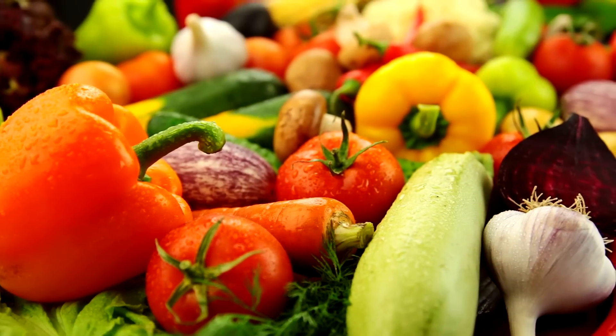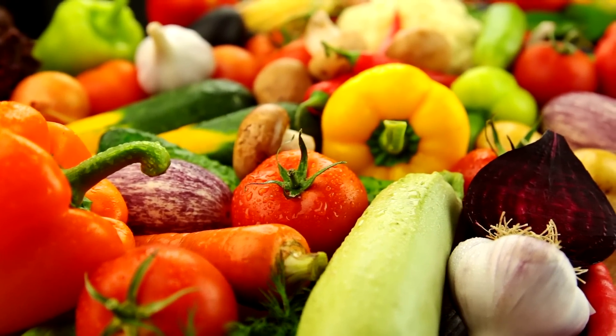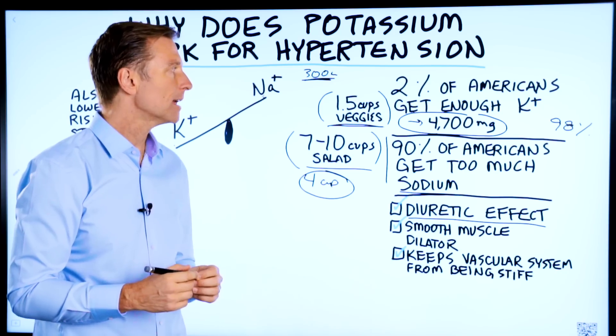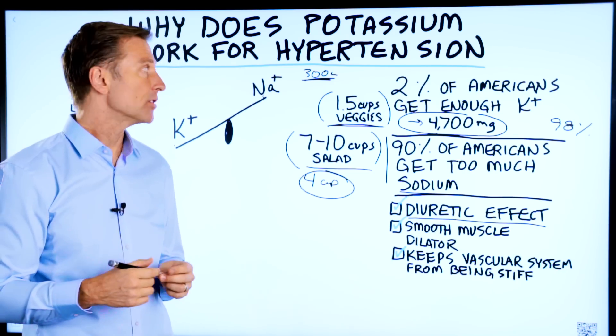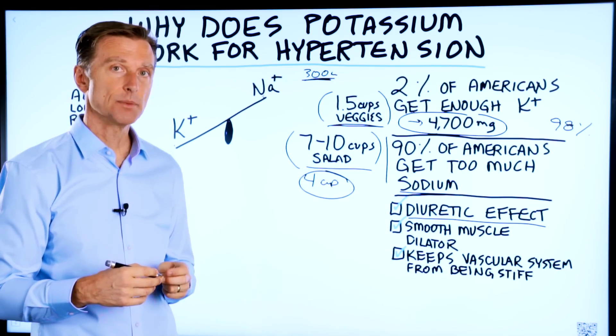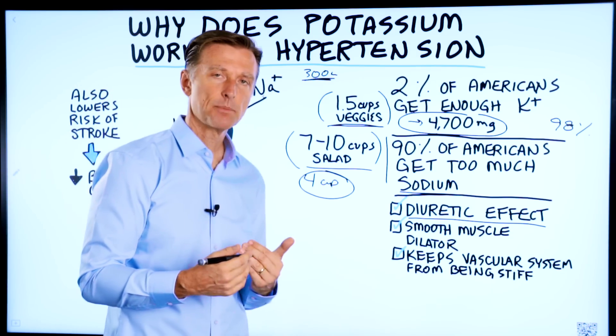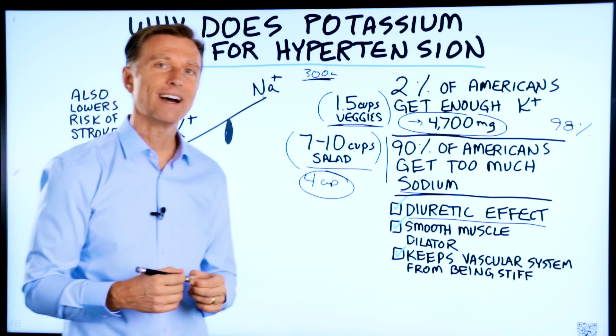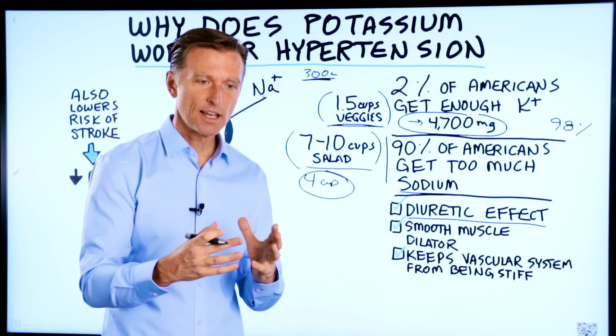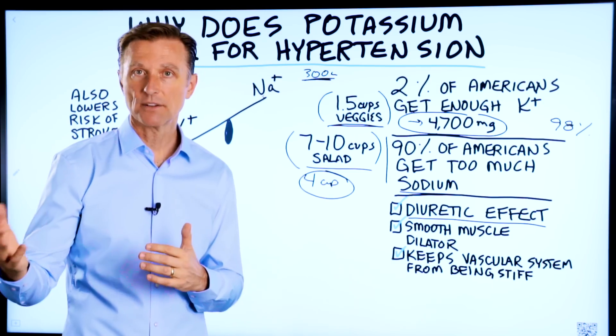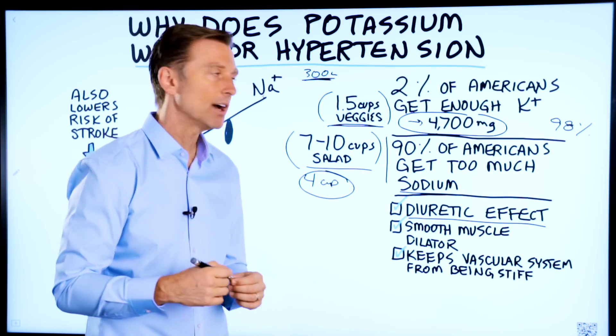Either increase the foods that are high in potassium, which I'll put some links down below on that, or take potassium as a supplement or an electrolyte powder, and you're going to find that your blood pressure is going to start coming down. Now, the other cause of hypertension is low vitamin D3. So if you take vitamin D3 and potassium or get it from the food, you will find that your blood pressure should be coming down.